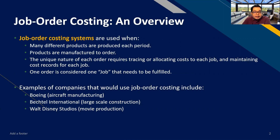Job order costing systems are used when many different products are produced each period. For example, if your business is a furniture business, every order of furniture is a different product. It's not a production line like poured beef or canned goods. Your products are more or less differentiated every time — one furniture is not the same as another. Under a job order costing system, we want to get the cost of each job or product, and these products are not standardized.